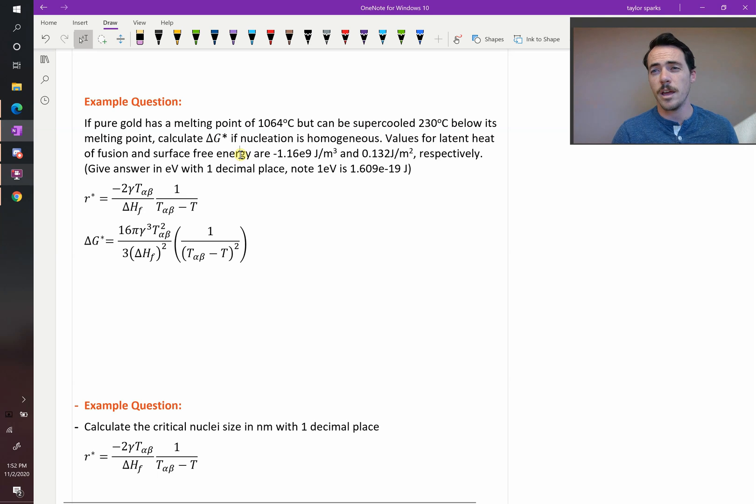All right, let's actually do an example calculation of this. This question says the following: if pure gold has a melting point of 1064 degrees Celsius, but it can be supercooled 230 degrees below its melting point, calculate delta G star. Again, that's our activation energy for homogeneous nucleation, assuming that you've got homogeneous nucleation occurring.